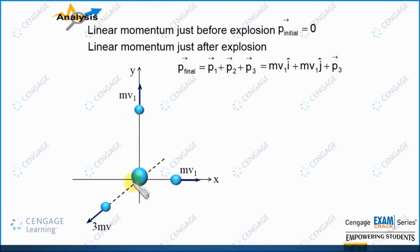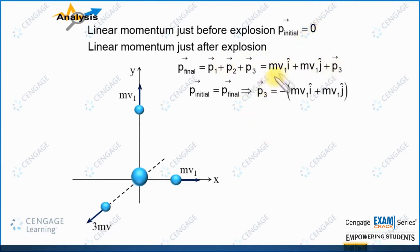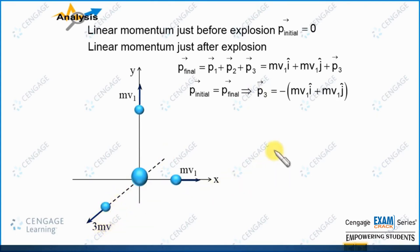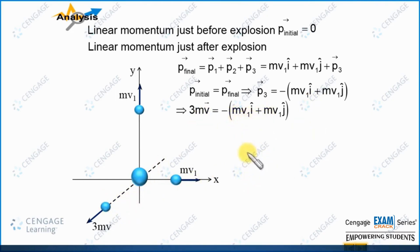Since p_initial equals p_final, and p_initial = 0, we can solve: p3 = −m·v₁ î − m·v₁ ĵ. Since p3 = 3m·v_vector, we get v_vector = −(1/3)v₁ î − (1/3)v₁ ĵ. The m's cancel, giving us the velocity of the third part.